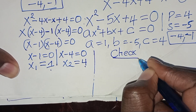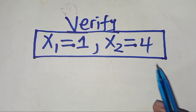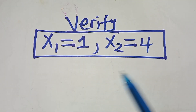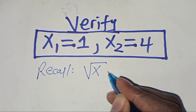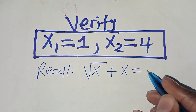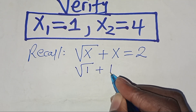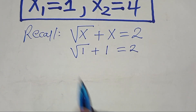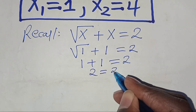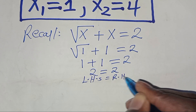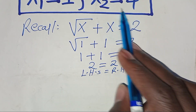We need to check whether x₁ equals 1 and x₂ equals 4 actually satisfy the original equation: square root of x plus x equals 2. Starting with x₁ equals 1: square root of 1 plus 1 equals 1 plus 1 equals 2. The left hand side equals the right hand side, so x₁ equals 1 satisfies the equation.